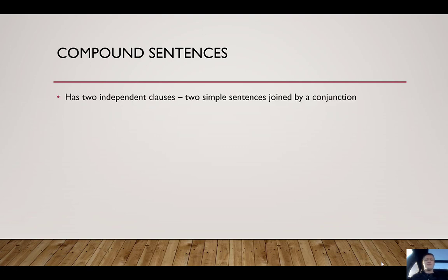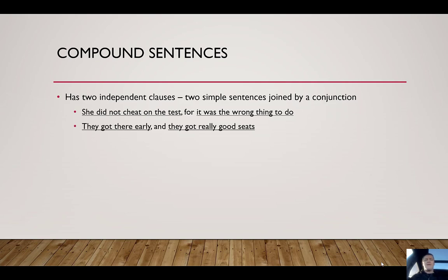The next one is the compound sentence. Now this has two independent clauses, so two simple sentences that are joined by a conjunction. So let's take a look at some examples here. She did not cheat on the test, for it was the wrong thing to do. And you can see the independent clauses have been underlined here. They got there early, and they got really good seats. They had no ice cream left at home, and they didn't have money to go to the store.